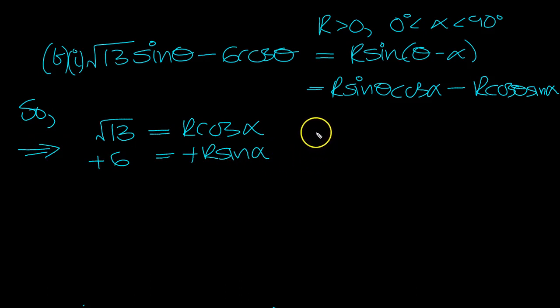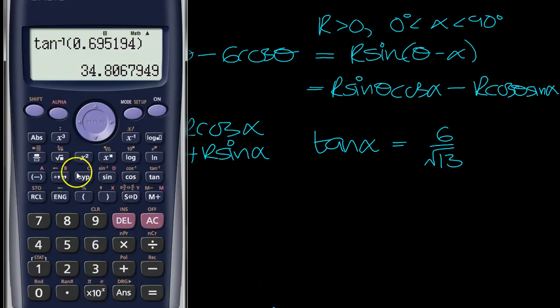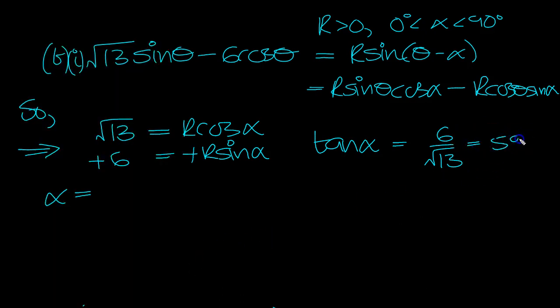So tan alpha then is equal to 6 over root 13, so alpha is equal to shift tan 6 divided by root 13, which is 59 degrees.